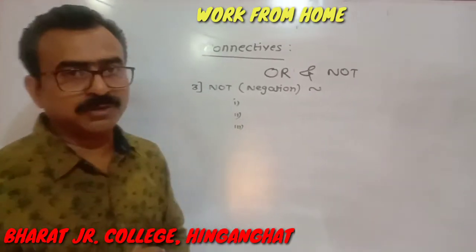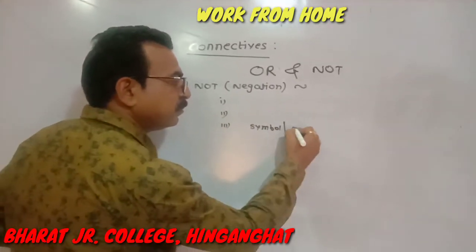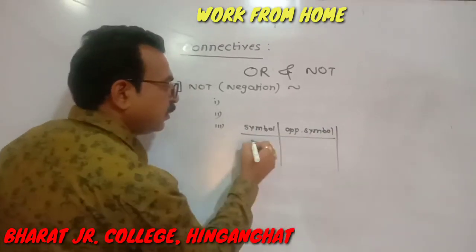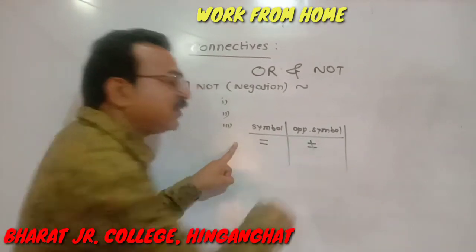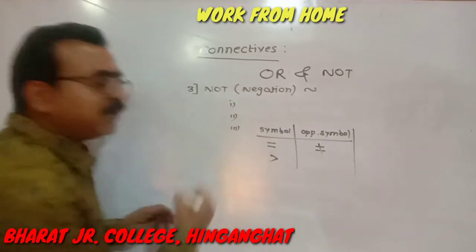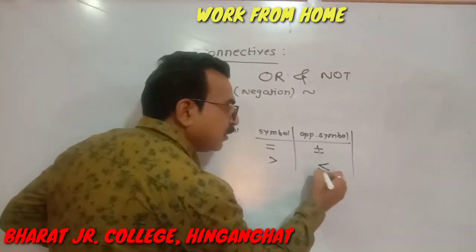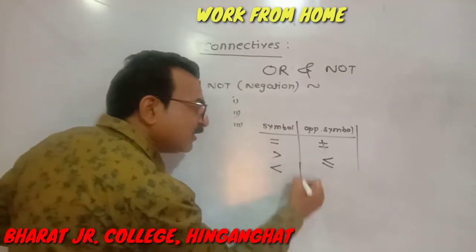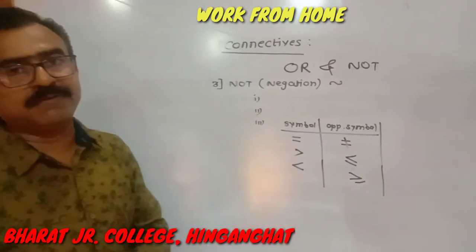The third rule is: in case of a symbolic statement, you have to use opposite symbols. For example, if 'is equal to' (=) is given in the statement, then in place of 'is equal to' you write 'is not equal to' (≠). If 'greater than' (>) is present, then write 'less than or equal to' (≤). If 'less than' (<) is present, then in place of it write 'greater than or equal to' (≥).